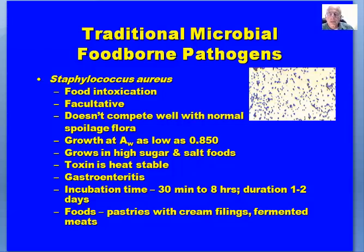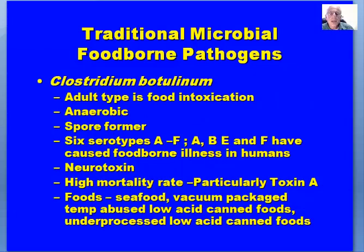S. aureus produces projectile vomiting — if you have projectile vomiting very rapidly after eating a product, you can almost be assured it's a result of staph toxin. Clostridium botulinum in the adult type is a food intoxication. There is a child or infant form typically associated with honey. It's an anaerobic spore former. There are six serotypes — A, B, E, and F have caused foodborne illness in humans. It's a neurotoxin with a high mortality rate, particularly for toxin A.